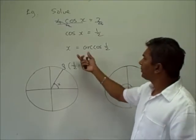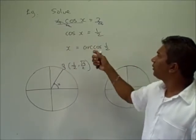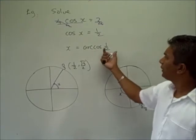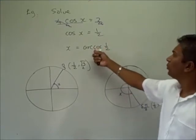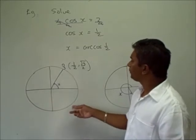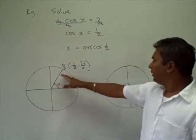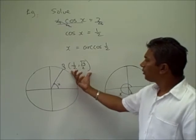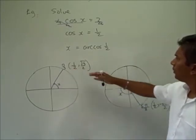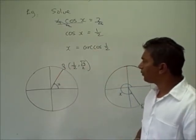Our second step is to get x by itself. So x is equal to the arc cosine of 1 half. The arc cosine of 1 half is the angle whose cosine is 1 half. If you go back to our unit circle, at pi over 3 radians, our coordinates are 1 half and the square root of 3 over 2. So the arc cosine of 1 half would be pi over 3.